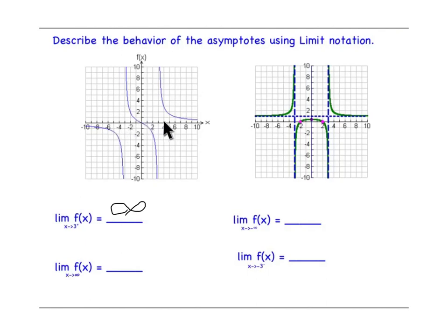This is a vertical asymptote and this is a horizontal asymptote. As x approaches negative infinity, I'm looking at the behavior of the horizontal asymptote. As x approaches negative 3 from the left, I'm looking at the behavior on one side of the vertical asymptote. I come over here, I'm looking for negative 3 — here's my asymptote — and as I approach it from the left, the graph is going to infinity.